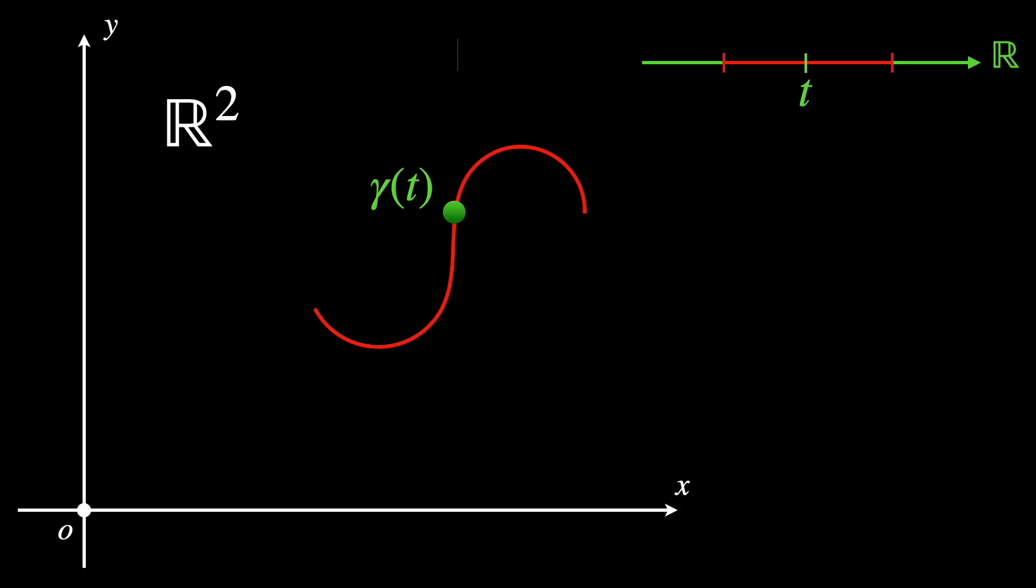But all of this is possible only because this curve, which we will call gamma, takes inputs in R and returns outputs in R2. In other words, gamma is a mapping from the Euclidean flat space R, which is the real line, to the Euclidean flat space or surface R2.